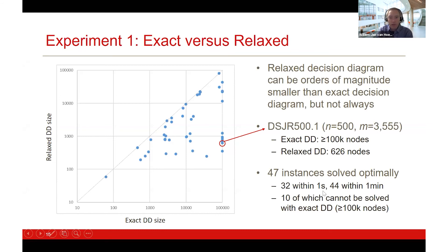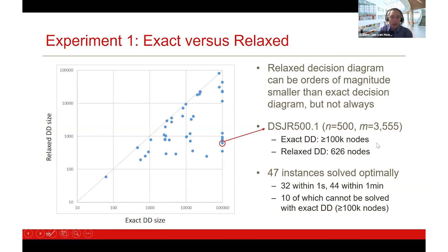Regarding exact versus relaxed diagram sizes, a log-log plot shows that relaxed diagrams can be orders of magnitude smaller. For instance DSJR 500.1, the exact diagram needs at least 100,000 nodes — where I capped computation — whereas the relaxed diagram only needs 626 nodes to prove optimality. This is very promising.